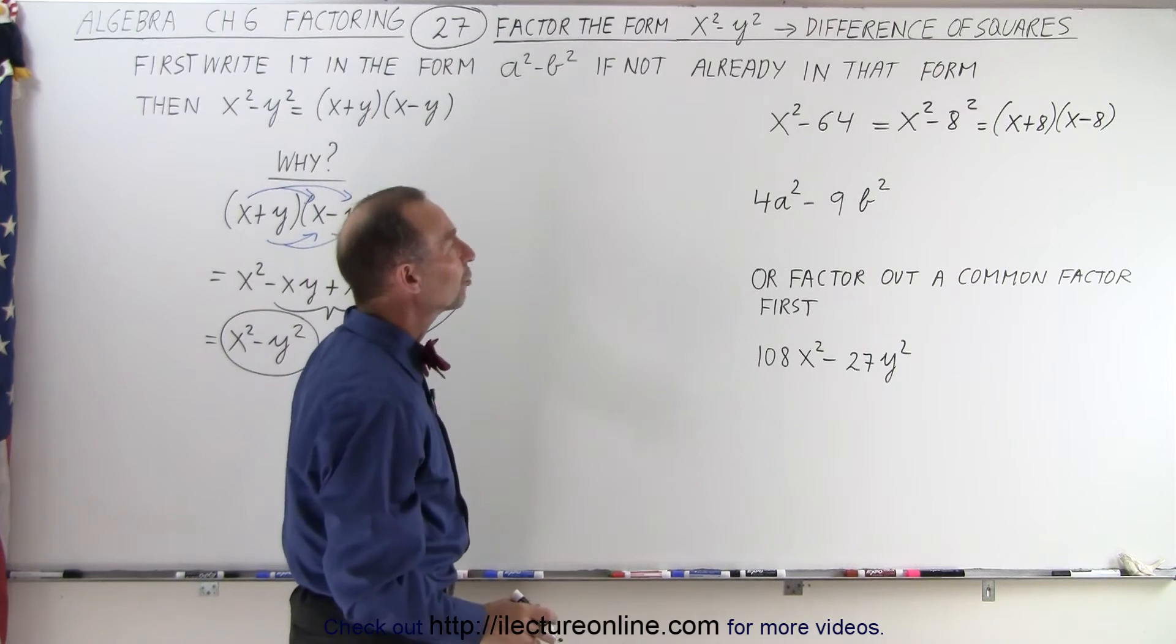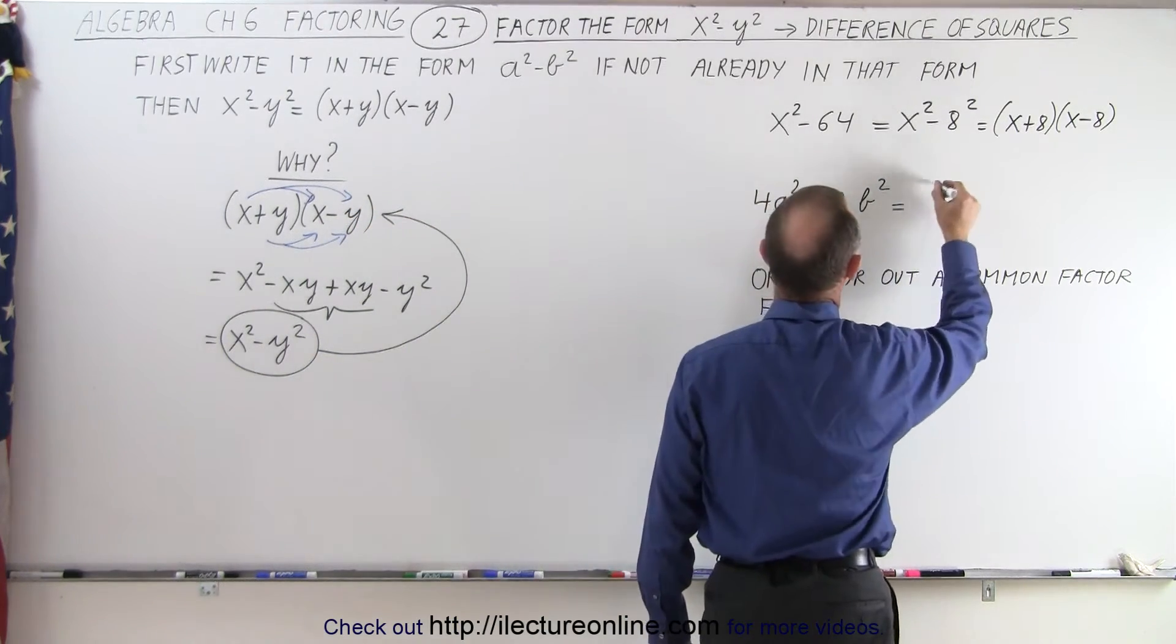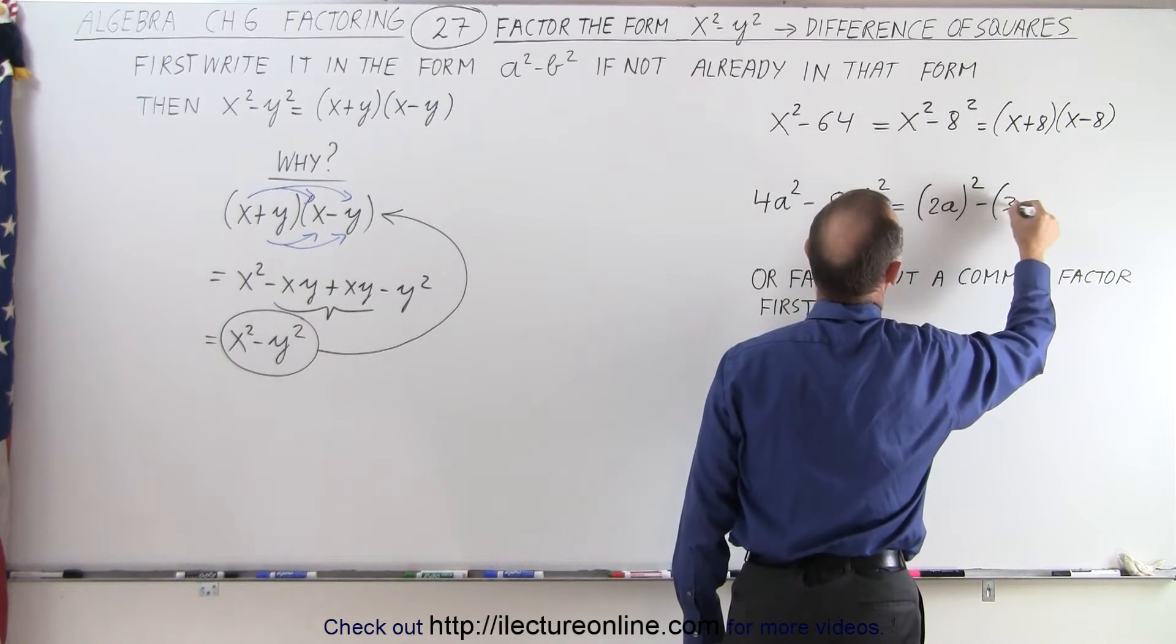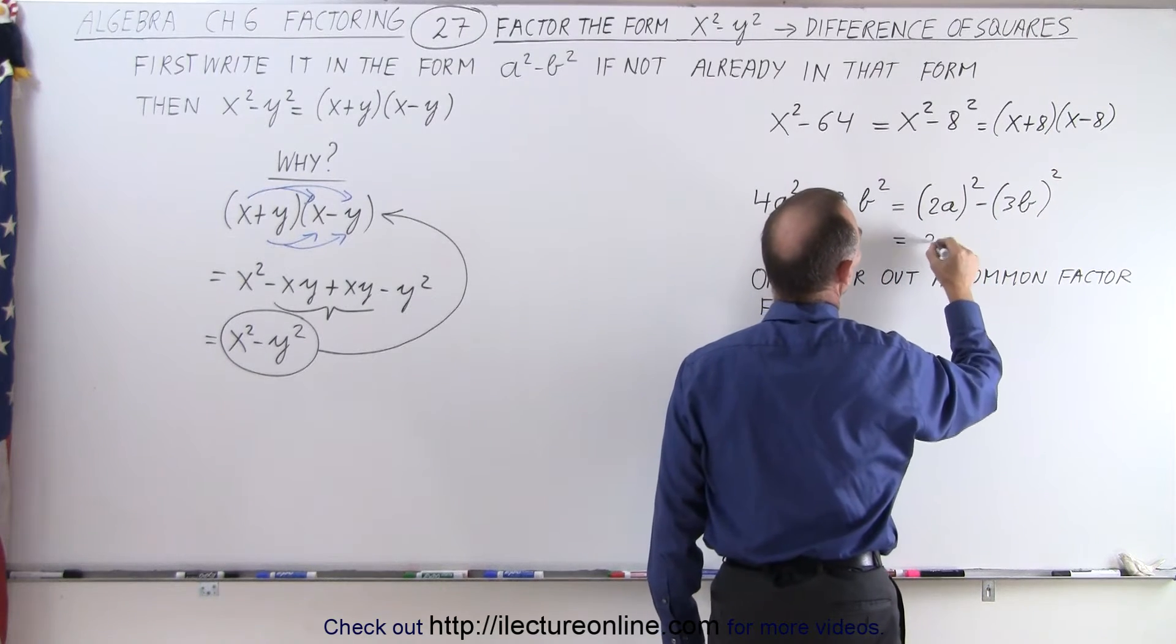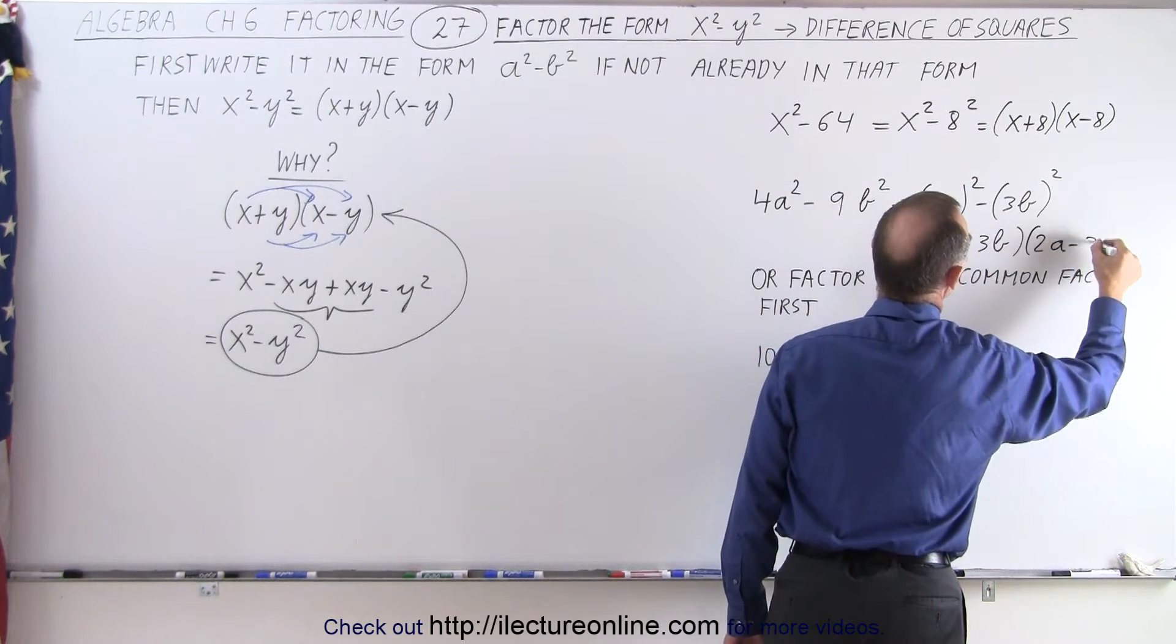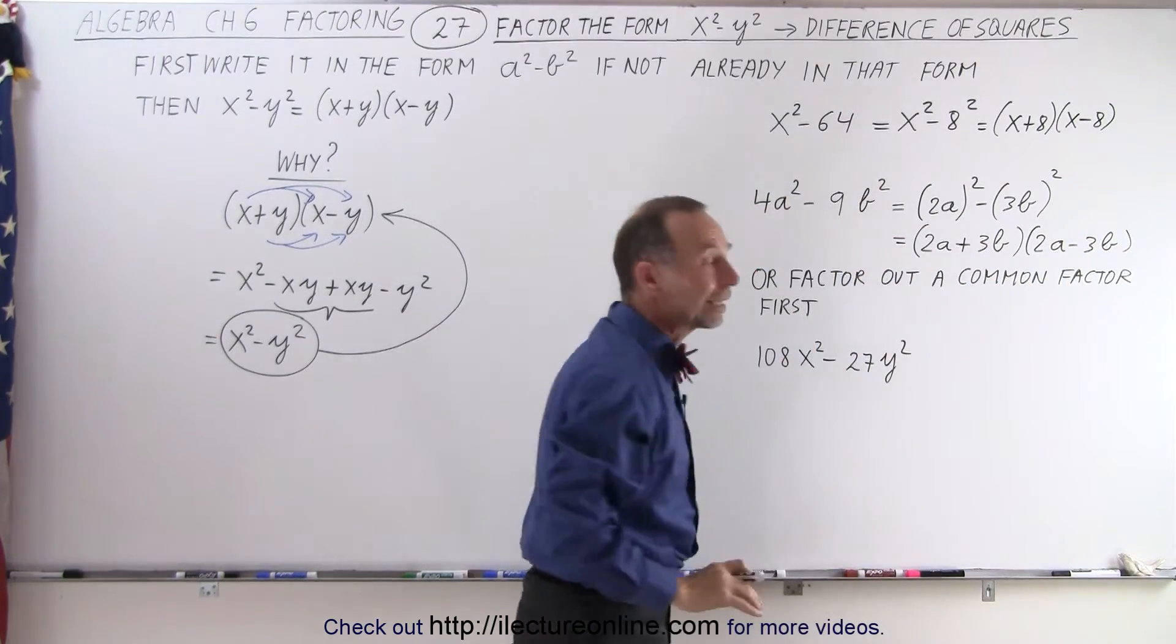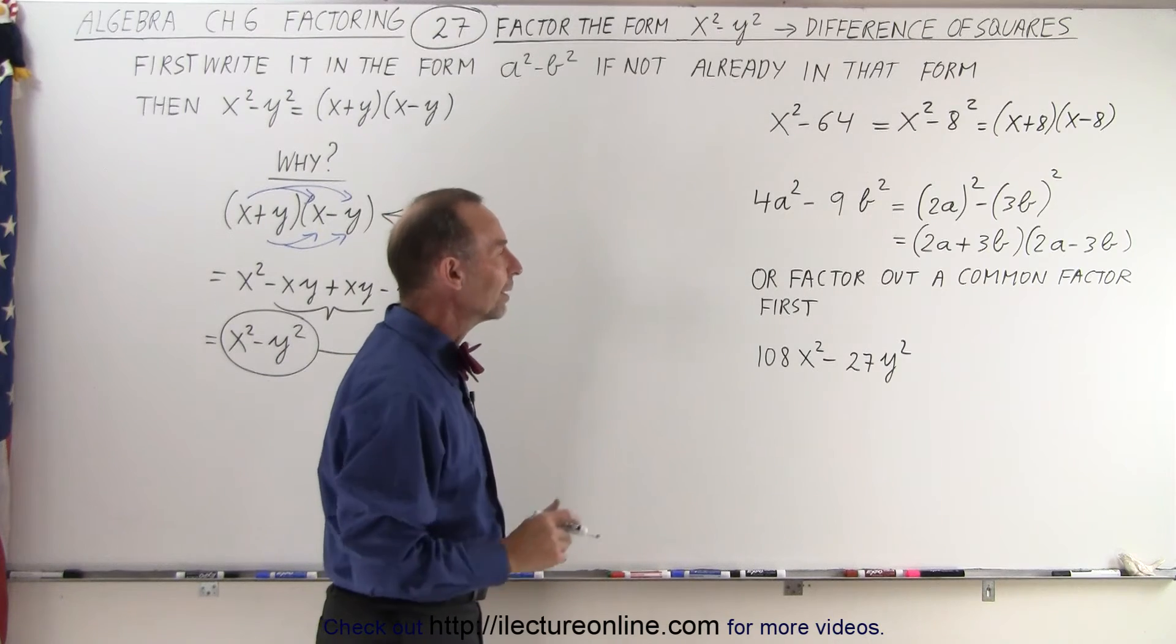How about this? 4a squared minus 9b squared? Well, that can be written as the quantity 2a squared minus the quantity 3b squared. Now you can factor that and write it as 2a plus 3b, doesn't matter what order you write it in, times 2a minus 3b. And so this is the factored form of this. Again, it may not have looked like the difference of squares until you rewrite it.